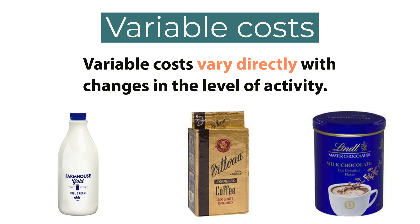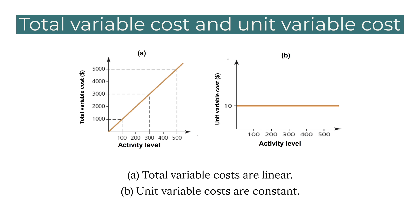Variable costs are those costs which vary directly with changes in the level of activity. For example, in Candy's coffee shop: more mochas sold means more drinking chocolate, more coffee beans, and more milk purchased. An important feature of variable cost per unit is that it remains the same at all activity levels. However, as the number of units increases, the total variable costs increase. Remember: variable cost per unit remains the same, but total variable costs rise with volume.